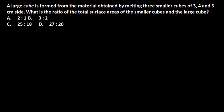Welcome back guys. We have solved several problems regarding surface area and volumes, but this is a problem that comes up many times in different exams. A large cube is formed from material obtained by melting three small cubes of 3, 4, and 5 centimeters side respectively. What is the ratio of the total surface area of the smaller cubes and the large cube?